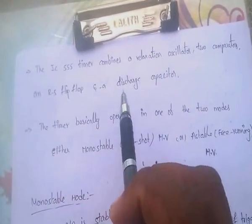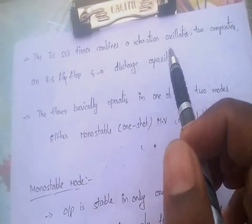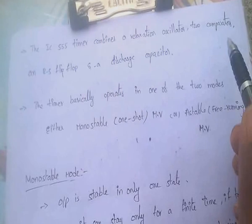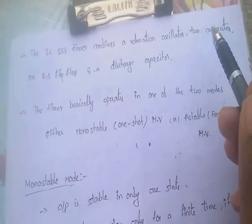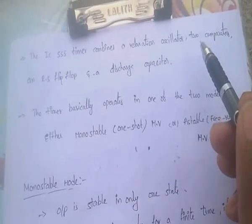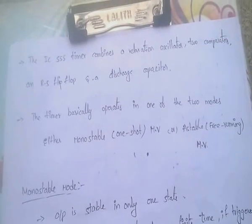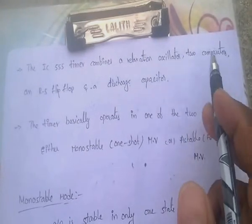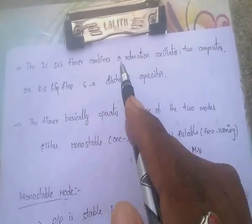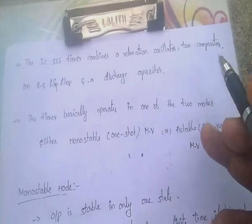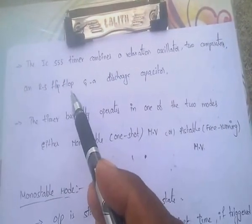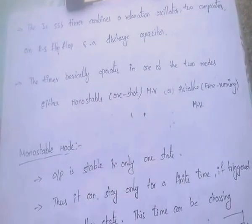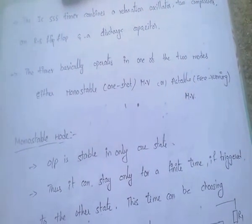The IC 555 timer combines a relaxation oscillator and two comparators — one comparator with input reference of two-thirds VCC and another with one-third VCC — along with an RS flip-flop and a discharge capacitor.